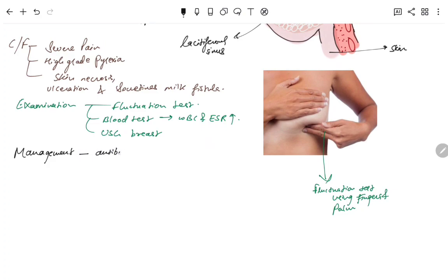WBC and ESR raised. Management: antibiotics, fermentation, needle aspiration, and if it is severe cases, there will be surgery.